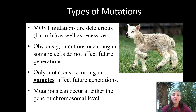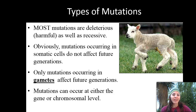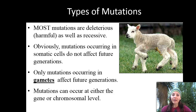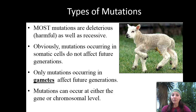There are different types of mutations, and most mutations are deleterious — a good SAT vocabulary word meaning harmful. Mutations occurring in somatic cells, which are our body cells, don't affect future generations. However, if a mutation occurs in a gamete — the sex cells — that will get passed on. The female gamete is the egg or ova, while the male gametes are sperm. Mutations can occur at either the gene level or the chromosomal level.